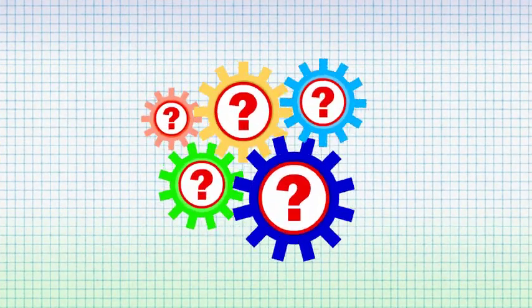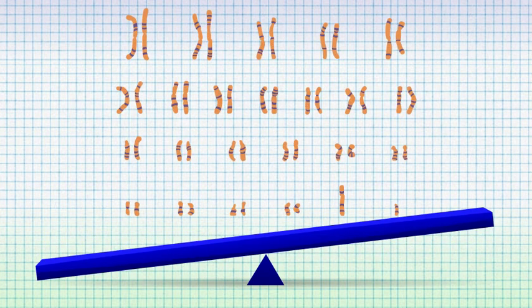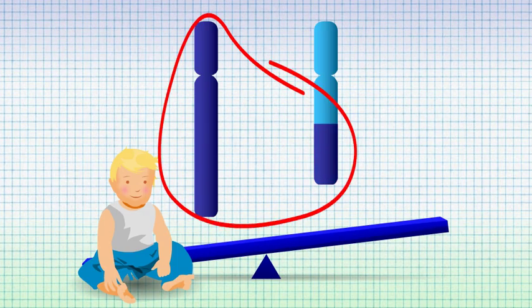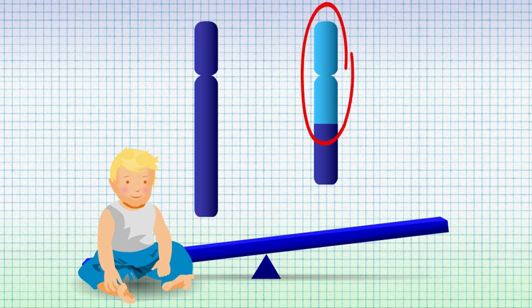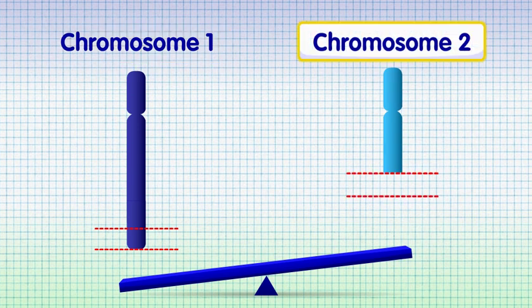However, there are other possibilities where an unbalanced version of the chromosomes could be handed on, resulting in a baby having too much of one chromosome and too little of the other. In this case, too much of chromosome 1 and missing a segment from chromosome 2.